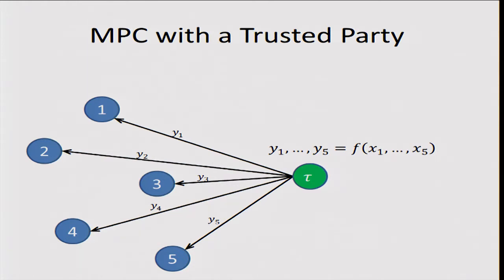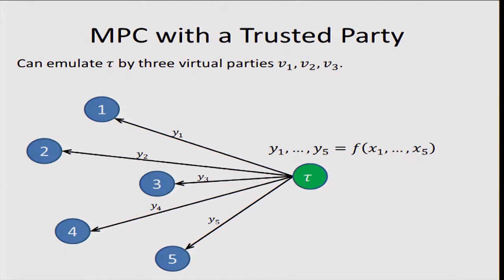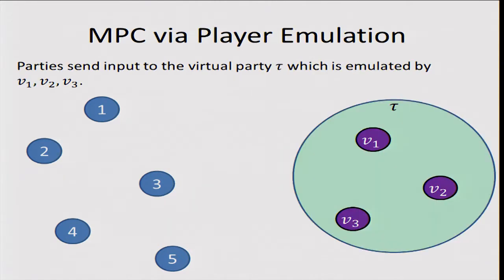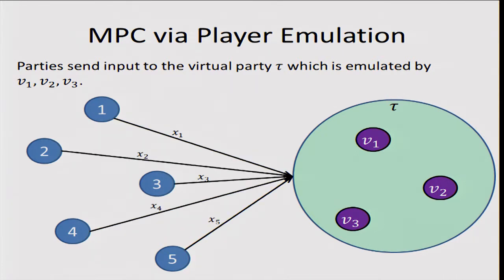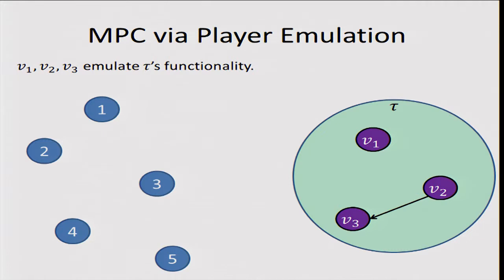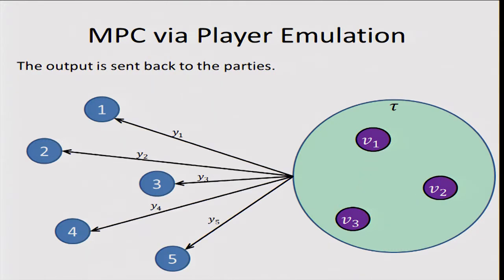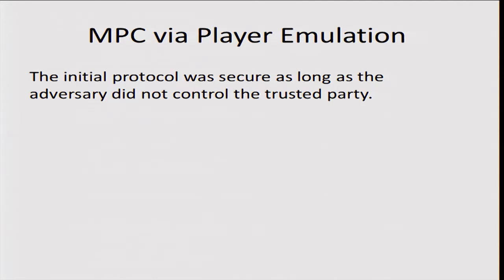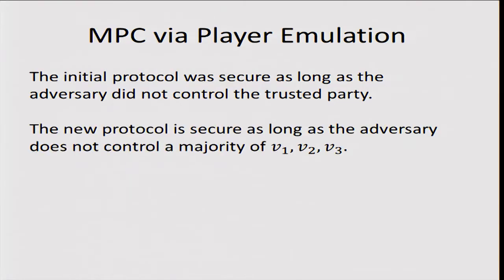Notice that Tau is just a reactive functionality, so it can be emulated by other players. We introduce three virtual players V1, V2, and V3 that emulate whatever Tau did. Now Tau doesn't really exist — it's being emulated by a three-party MPC protocol between V1, V2, and V3. This new protocol is secure even if the adversary controls one out of V1, V2, and V3, because the underlying three-party protocol is secure against one corrupt player.